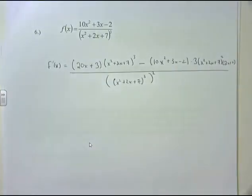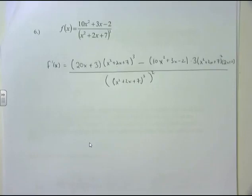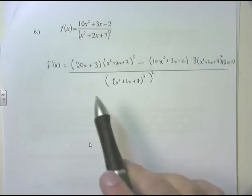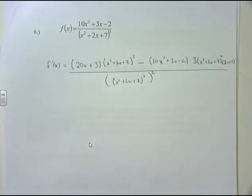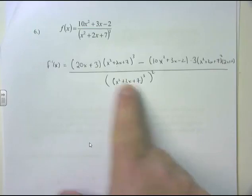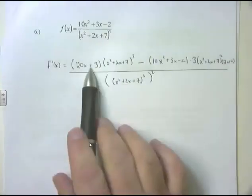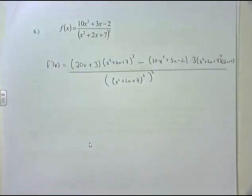That's the answer we want. In terms of cleaning up, power-to-a-power means you can write (x² + 2x + 7)³ squared as (x² + 2x + 7)⁶. But this form is what we want to see — it shows you know how to take the derivative of these more complicated functions. We'll apply this later when finding velocity from distance functions, related rates, and optimization. Our focus right now is taking the derivative of these much more complicated functions. Hopefully this has been helpful — see you in the next video.